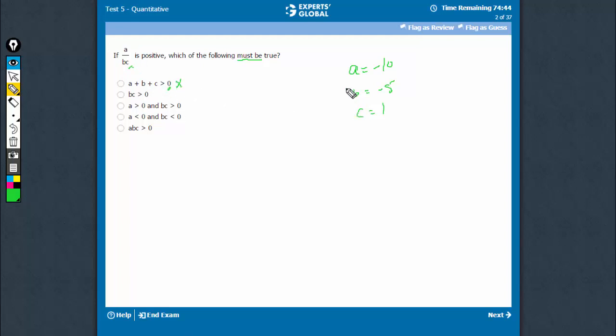Similarly, bc is greater than 0. In this case, only bc is greater than 0 doesn't have to be necessarily true. a is greater than 0 and bc is greater than 0. This case can be eliminated.